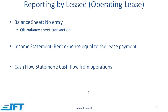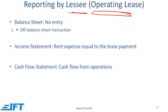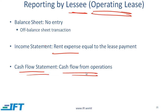Let us now get into the reporting, and we'll first take the lessee perspective, then the lessor perspective. For an operating lease from the perspective of the lessee: is anything recorded on the balance sheet? No, it is an operating lease. Effectively, the lessee makes a payment each period — that is a lease payment, it is like a rental. It shows up on the income statement as a rent expense or lease expense, and it would be an operating expense. On the cash flow statement, this would impact CFO — it would be a cash outflow shown in the CFO segment of the cash flow statement.